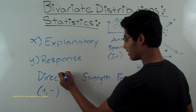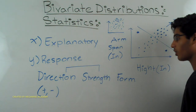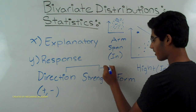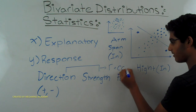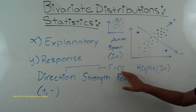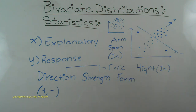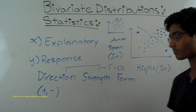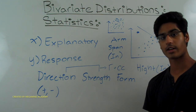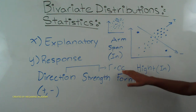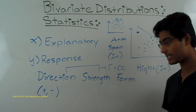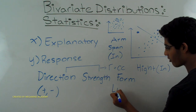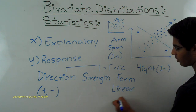Both direction and strength can be described with something called the correlation coefficient, which is r. The correlation coefficient is only applicable when we have a linear graph or a linear trend. That brings us to the third descriptor — form — which asks: do we have a linear trend, or is it non-linear?